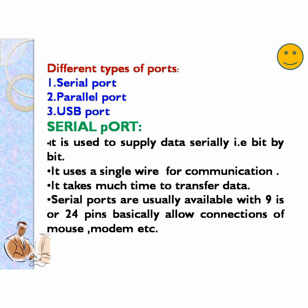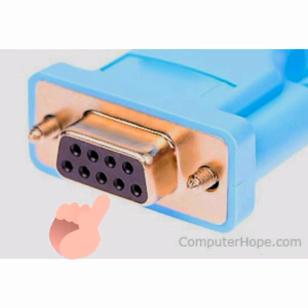Let's begin the class. Different types of ports — there are three types: serial ports, parallel ports, and USB ports. Serial ports use a single wire for communication and take more time to transfer data. Serial ports are usually available with 9 or 24 pins and basically allow connections of mouse, modem, etc. This is a picture of a serial port.